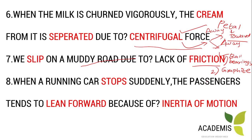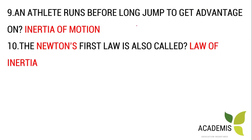When a running bus stops suddenly, the passengers tend to lean forward. This is due to the inertia of motion — the body continues in the state of motion even after the bus stops. Similarly, an athlete runs before a long jump to take advantage of the inertia of motion, helping them jump farther. This is an example of inertia of motion.